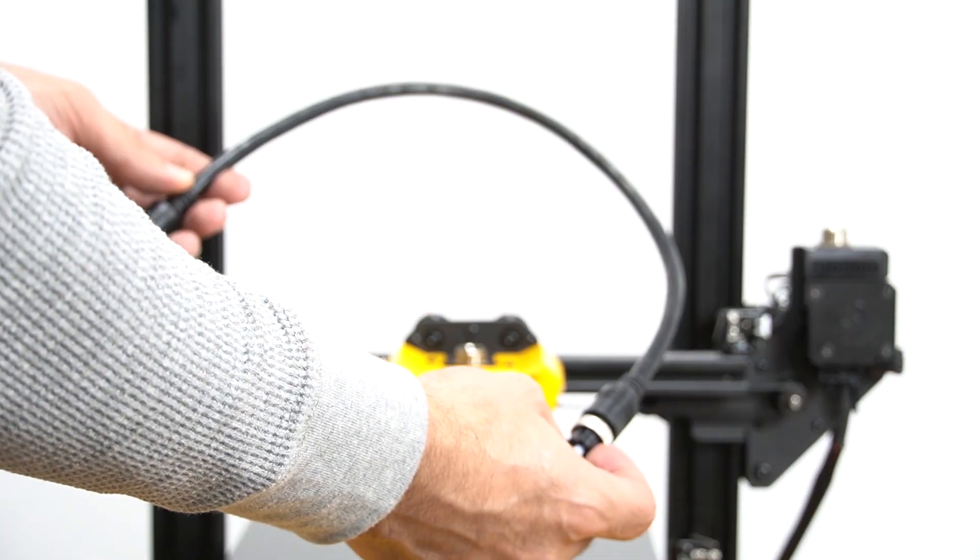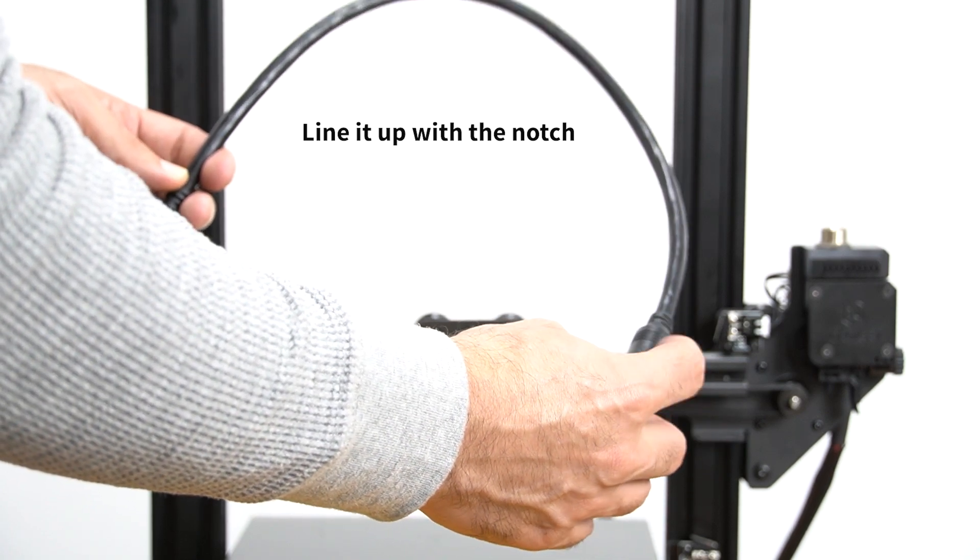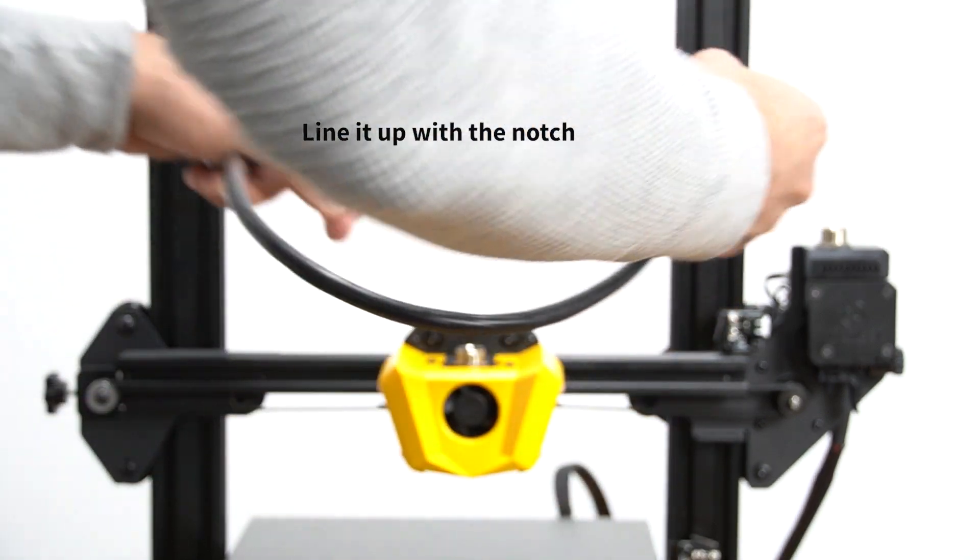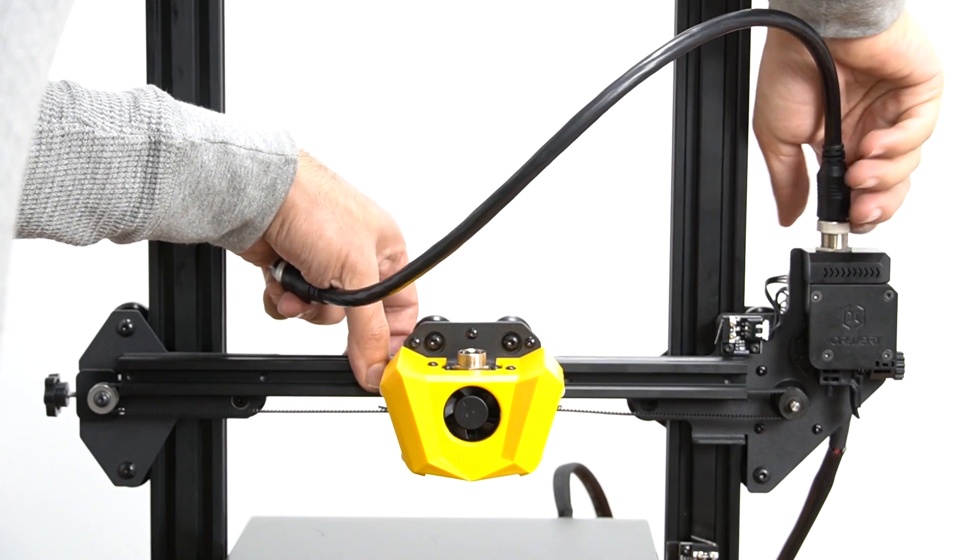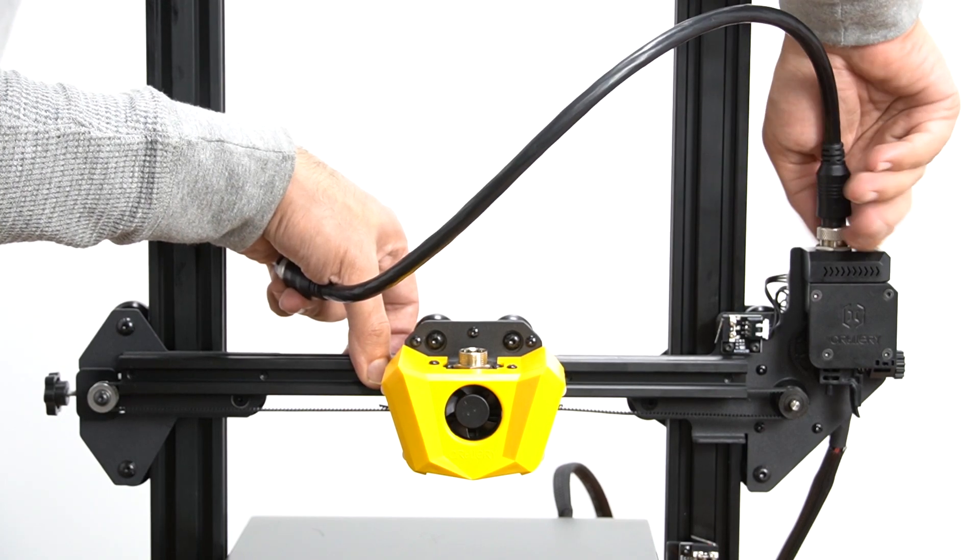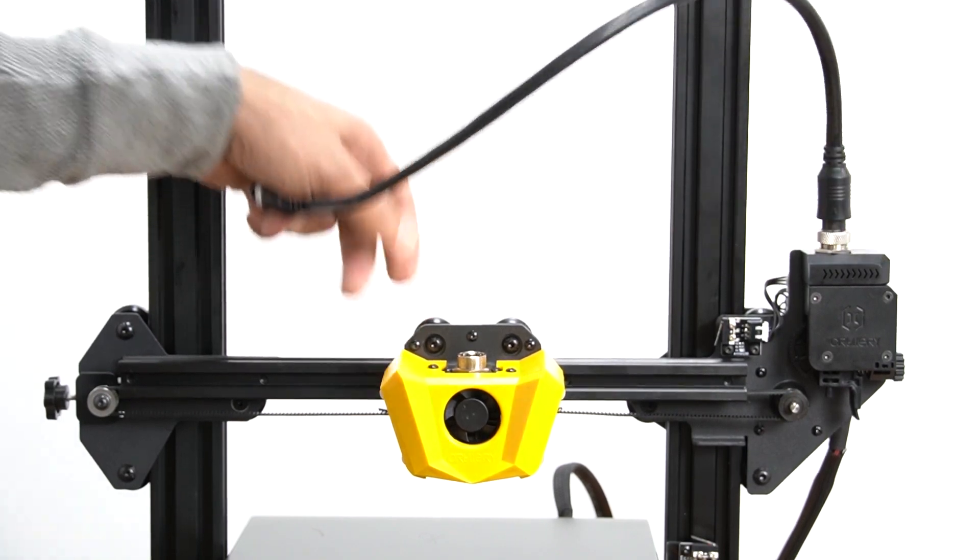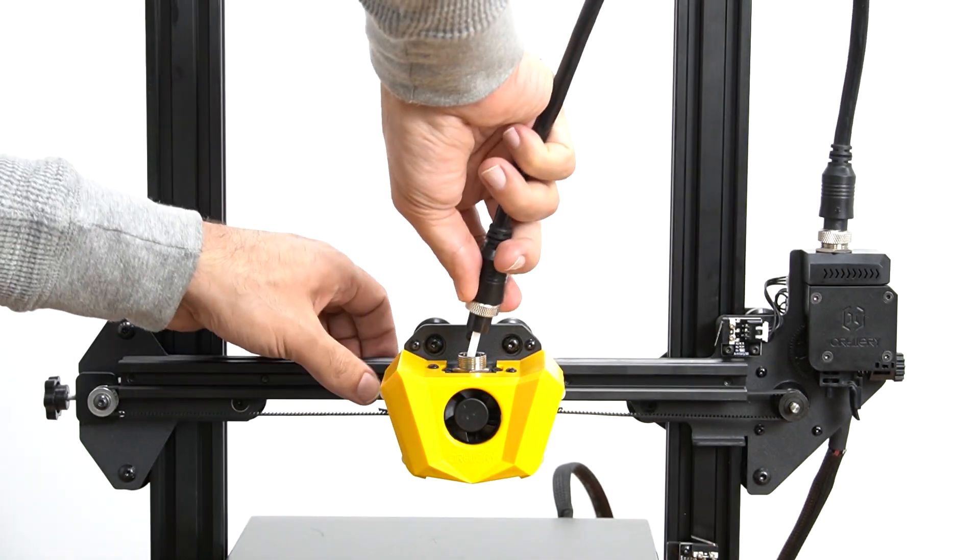Let's put back the Bowden tube. Just make sure you line it up with the knob and then lock the ring. And the other one for the hot end.